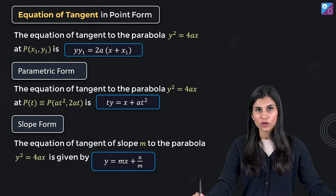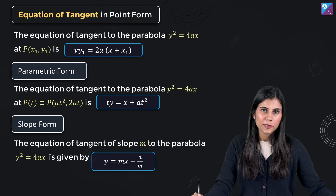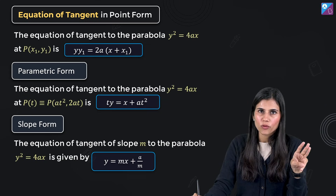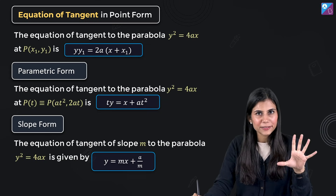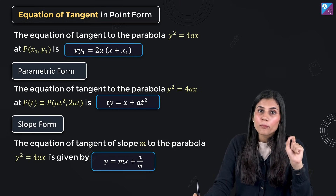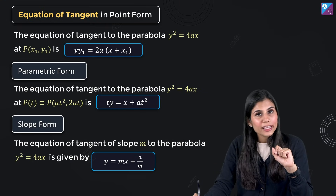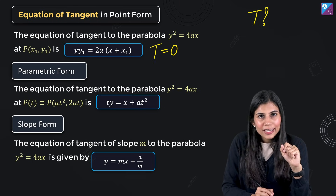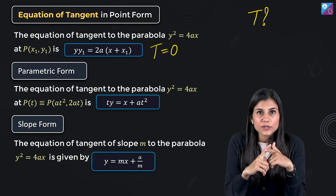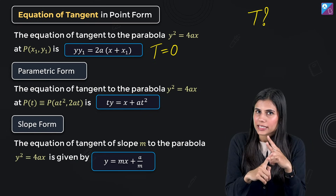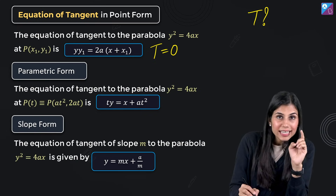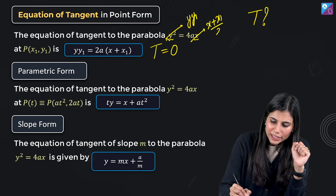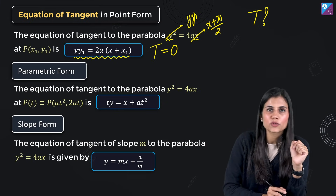Moving on to something very important from where questions are almost always asked: the equation of tangent to a parabola. We study it in three forms: point form, parametric form, and slope form. In point form, if (x1, y1) is the point of tangency for y² = 4ax, write the equation as T = 0. From the curve equation, obtain T by replacing y² with yy1 and x with (x + x1)/2. Simplifying gives yy1 = 2a(x + x1) as the tangent equation in point form.